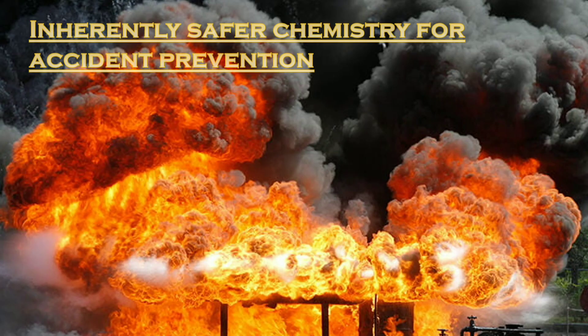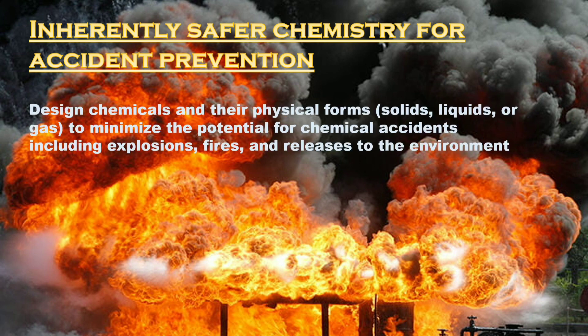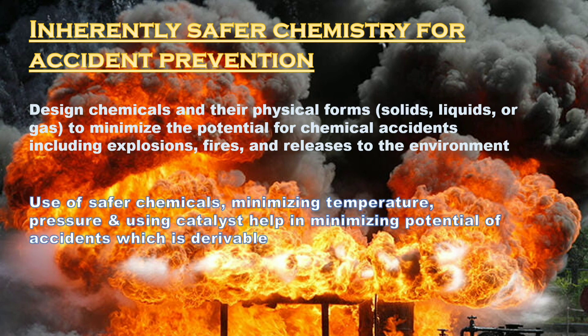The final principle is inherently safer chemistry for accident prevention. Design chemicals and their physical forms — solids, liquids, or gases — to minimize the potential for chemical accidents including explosions, fires, and releases to the environment. Using safer chemicals, minimizing temperature and pressure, and using catalysts all help in minimizing the potential for accidents.